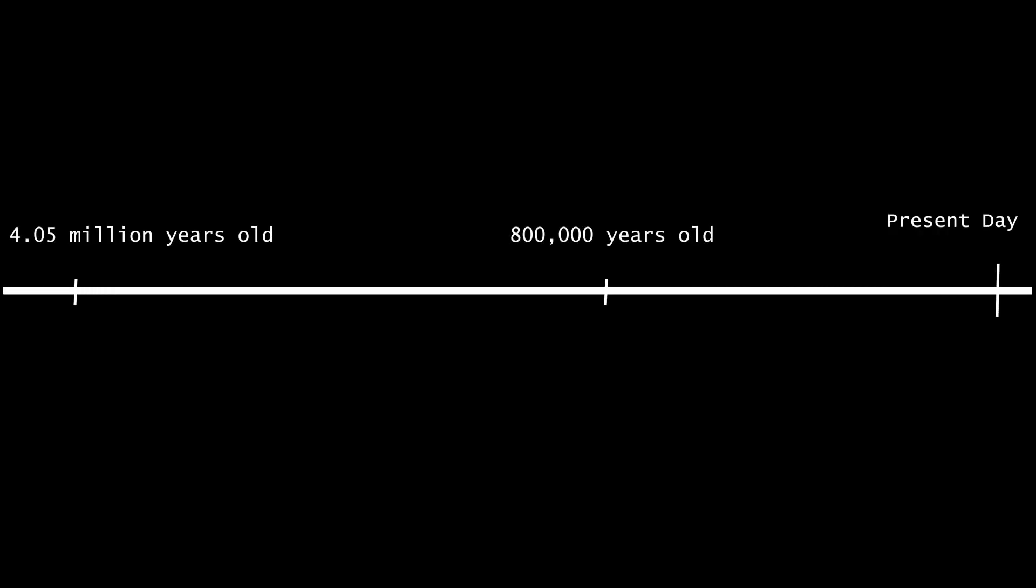A bit of background information on why this is significant. Currently, the continuous ice core record only extends about 800,000 years. The rest of recent climate history captured by ice cores is discontinuous.